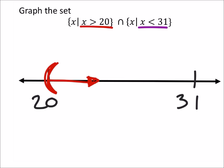And in purple, x is less than 31, so it's not eating the x, so it goes to the left. And it's not equal to, so we have a curved parenthesis right there.